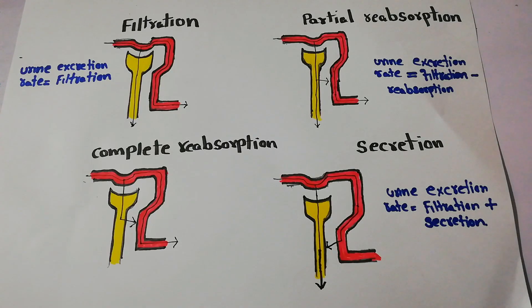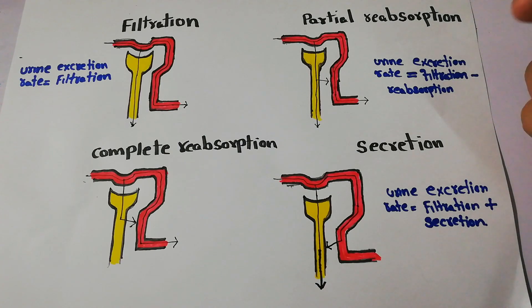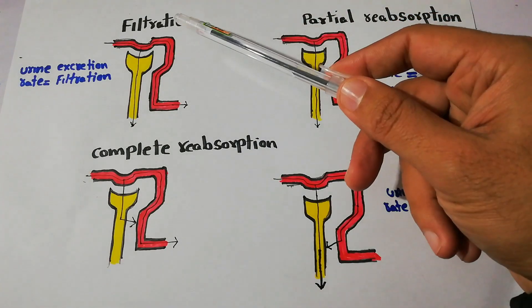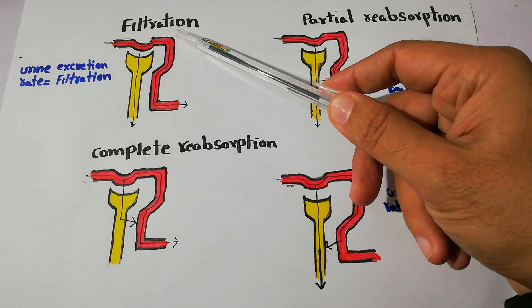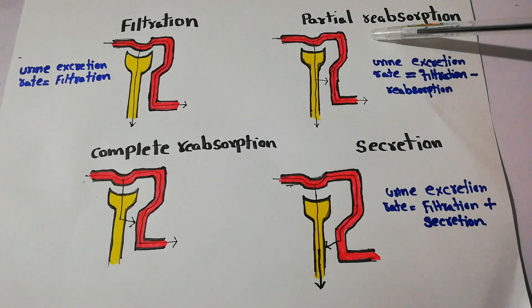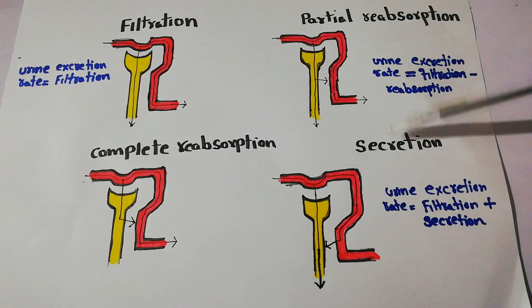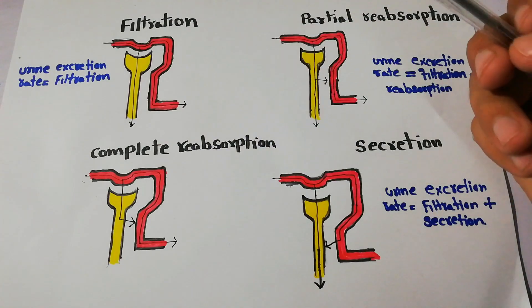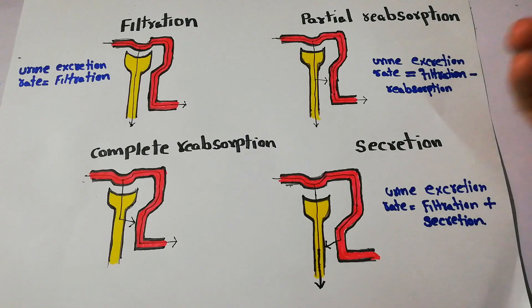Today we are going to discuss some of the important steps in urine formation. We have started discussing the urine formation process and covered urine excretion rate in our last lecture, so today we are going to discuss it in more detail. The first step in urine formation is filtration of blood, followed by reabsorption of some substances and secretion of some substances. All these processes occur in the nephrons and each step is important in determining the urine excretion rate.